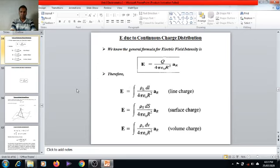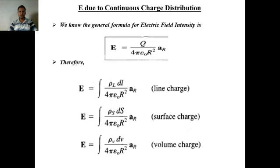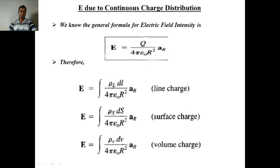Let me take a review of what we covered in the previous lecture. In the previous lecture we covered the E-bar formula due to point charge, due to line charge, due to surface charge, and due to volume charge. We had a detailed discussion on how we got these formulas and how Q can be replaced with rho_l dl, rho_s ds, and rho_v dv.